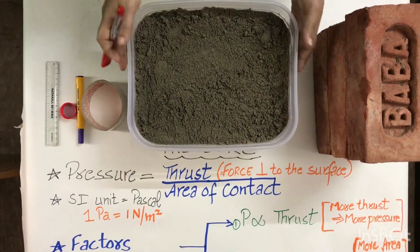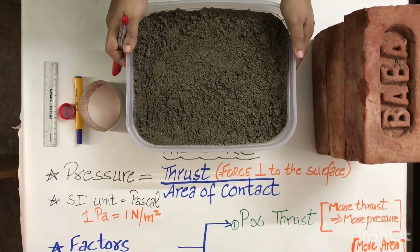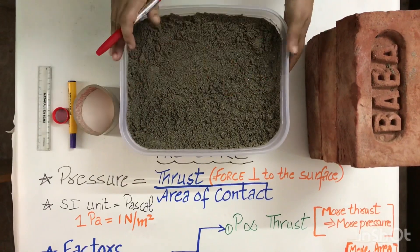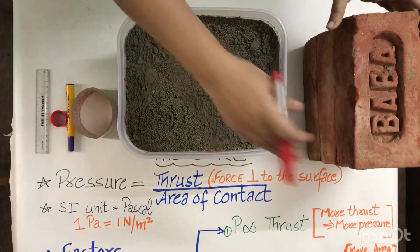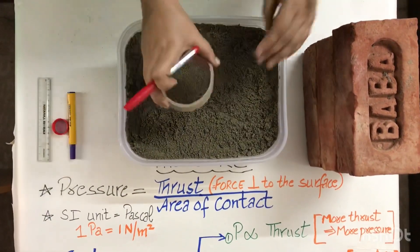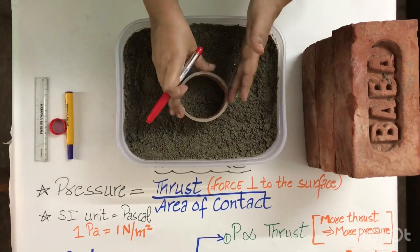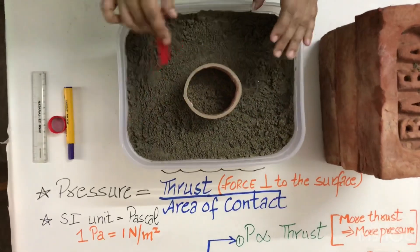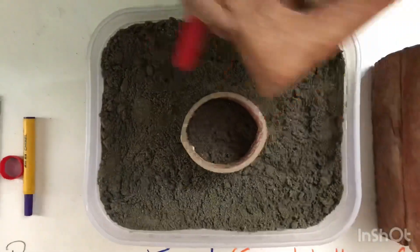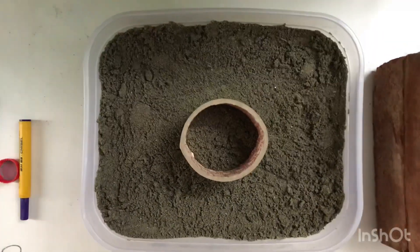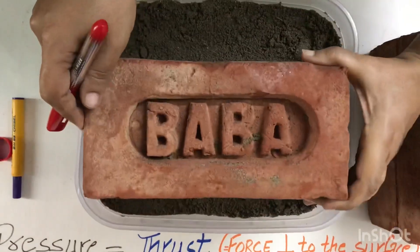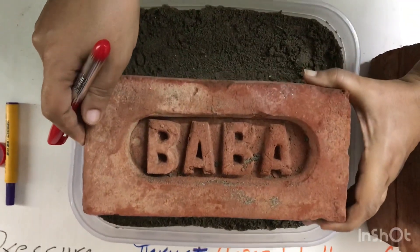What we have to study is the factors affecting pressure. First, we level the sand in the tub. I am using this spherical round object so that I can have the impression in the mud.